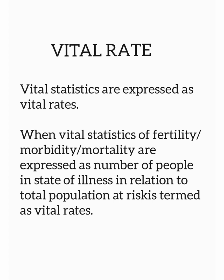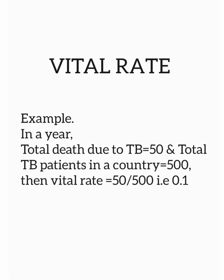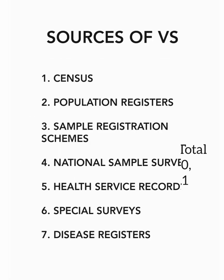For example, there is a country in which in one year TB patients who died were 50, and in the same year the existing TB patients were 500. So total deaths, meaning mortality, is 50, and total patients at risk — which may be TB or disease — are 500. So the vital rate is 50 divided by 500, which equals 0.1.